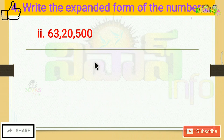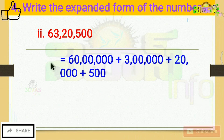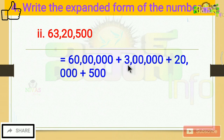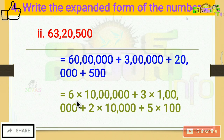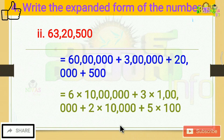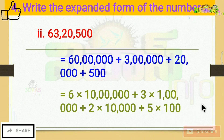That is the second problem. Expanding the next number: 3 lakhs is 3 into 1 lakh, that is the lakh place. Then 2 into 10,000 gives 20,000. Then 5 into 100.